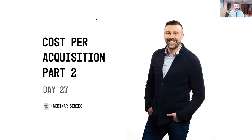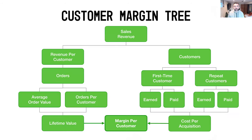All right, so as I mentioned, today we're talking about cost per acquisition. We're in day 27 of the 30-Day Profit Challenge and getting really close to the finish line. Just to recap where we've been: we've been looking at the customer margin tree, which we've been using to understand how to measure the overall margin of your customer. To do that, we've been looking at two sides of the equation — on the left-hand side, your revenue per customer, and on the right-hand side, your customers themselves and what it costs you to acquire those customers in the first place.